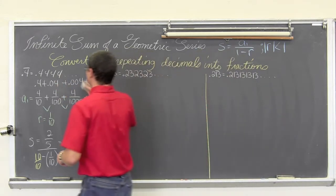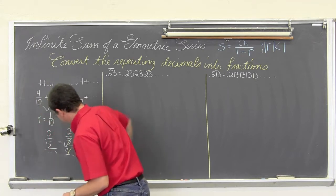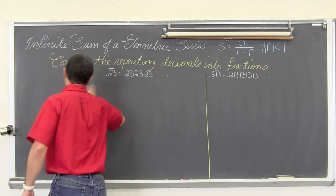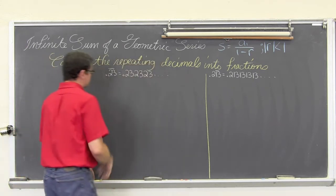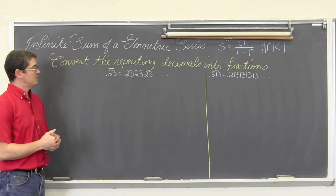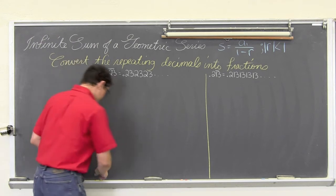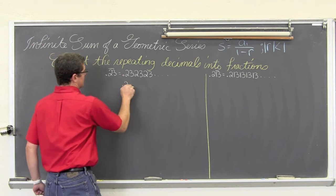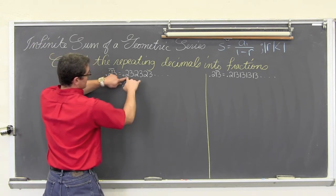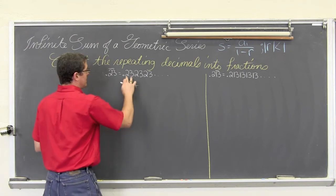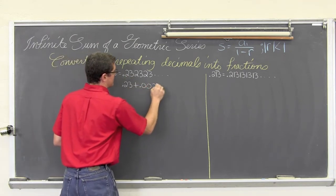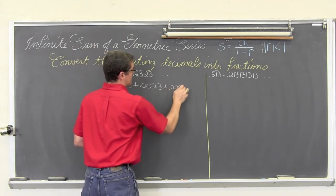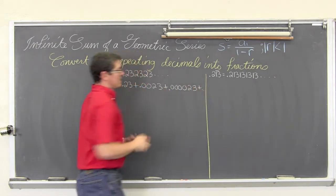I was a little bit tight on space, so let me erase this so I have more room for my next example. This example is going to work out very similar to the first one, except I am repeating two decimals instead of just one. So when we expand this out, we are going to get 0.23 — that is for the first two — plus two zeros, because we just took care of that first 23, so 0.0023, and then expand it again: 0.000023, and so on.